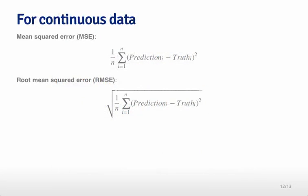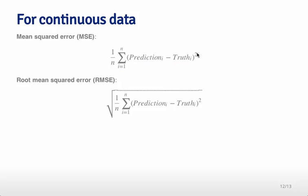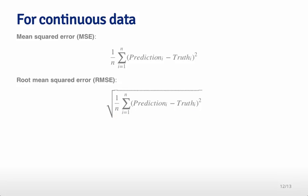For continuous data, you don't have the simple scenario of only two cases and two types of errors. The goal is to see how close you are to the truth. One common way is mean squared error: you take the prediction from your model for every sample, calculate the difference between the prediction and the truth, square it so all numbers are positive, and average the total distance. Since the distance has been squared, it's hard to interpret on the same scale, so people often take the square root — giving the root mean squared error, which is probably the most common error measure used for continuous data.